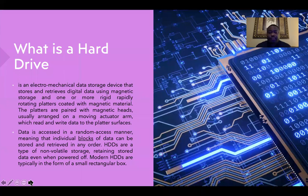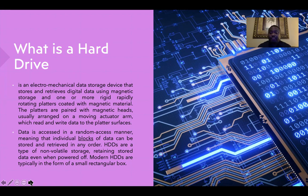First off, what is a hard drive? The hard drive is an electromechanical data storage device that stores and retrieves digital data using magnetic storage and one or more rigid, rapidly rotating platters. They basically coat it with magnetic material. The platters are paired with magnetic heads, usually arranged on a moving actuator arm, which reads and writes data to the platter surface. The data is accessed in a random access manner so that individual blocks of data can be stored and retrieved in any order. They are a type of non-volatile storage, retaining stored data even when the computer is powered off. Modern hard drives are typically formed in a small rectangular box.